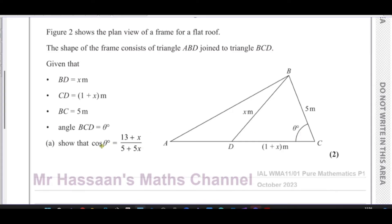We need to show that the cosine of theta degrees is given by this expression: 13 plus x over 5 plus 5x. So here we have a triangle which is not a right angle triangle and we have three sides given in terms of x. We have to show that the cosine of this angle is given by this. Obviously it seems quite obvious that we're going to have to use the cosine rule. The cosine rule being that the cosine of angle A equals B squared plus C squared minus A squared over 2BC.